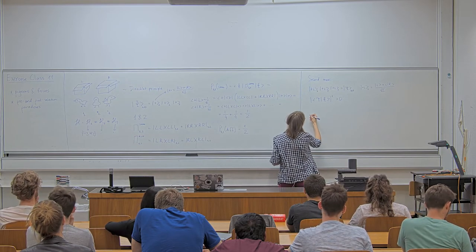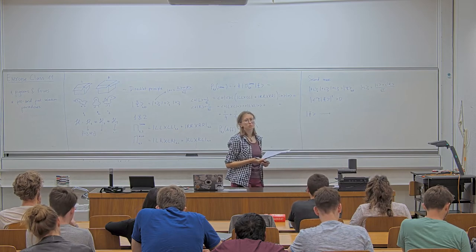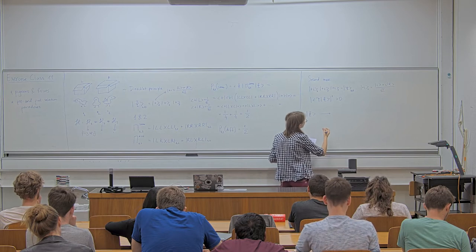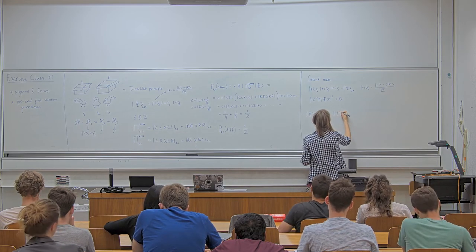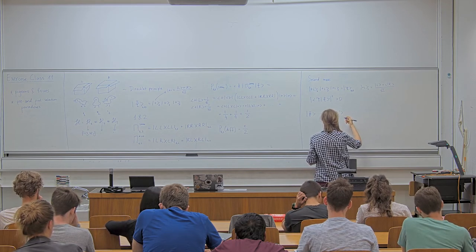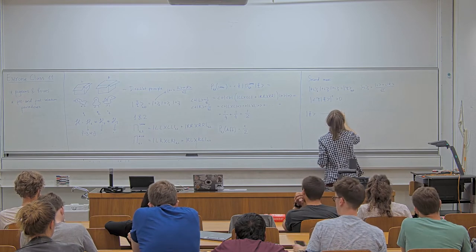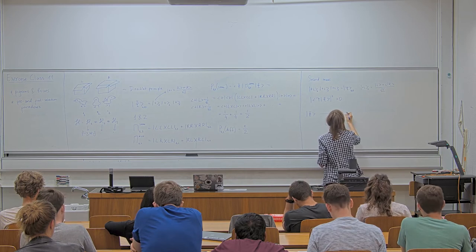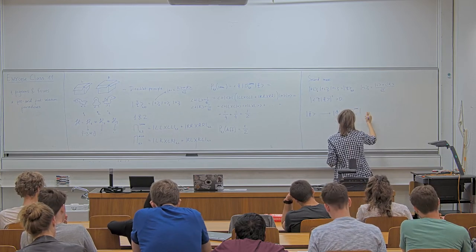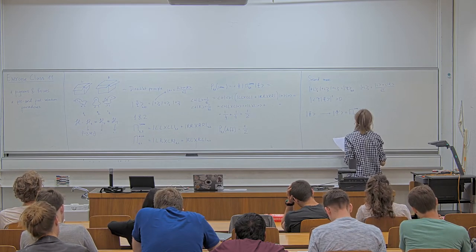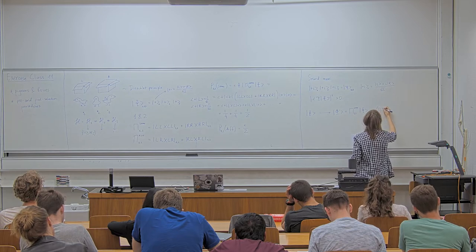Suppose we prepared our state Phi. Then we ask the question: are particles 1 and 2 in the same box? Asking the question in quantum mechanics corresponds to making the measurement and then projecting into the corresponding subspace. We get the state Phi-prime, which is our projector acting on the initial state with some normalization. So it's going to be LL + RR on the first and second system, and the initial state is plus_1, plus_2, plus_3.